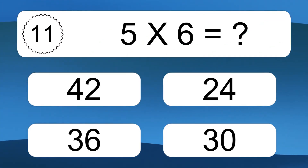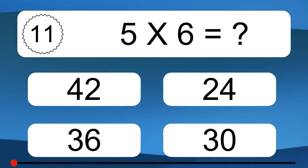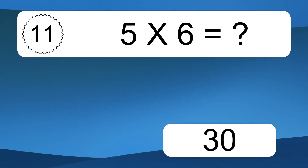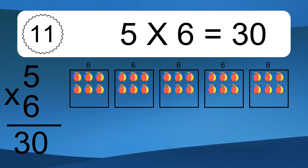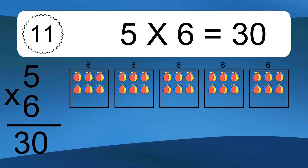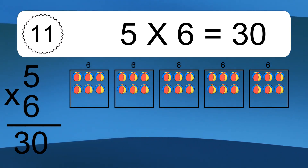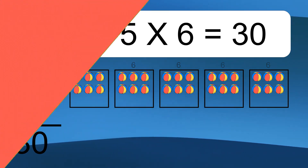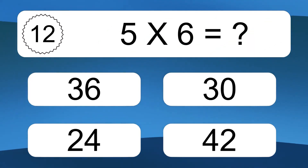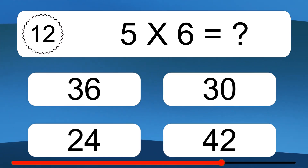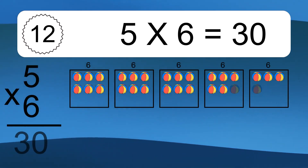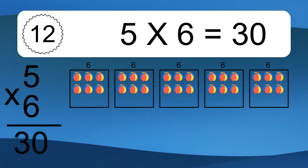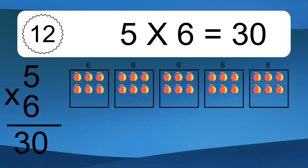5 times 6 equals what? 5 times 6 equals 30. We have 5 boxes, and each box has 6 colorful balls inside. If you count all the balls in all the boxes together, you will have 5 times 6 balls. This equals 30 balls.